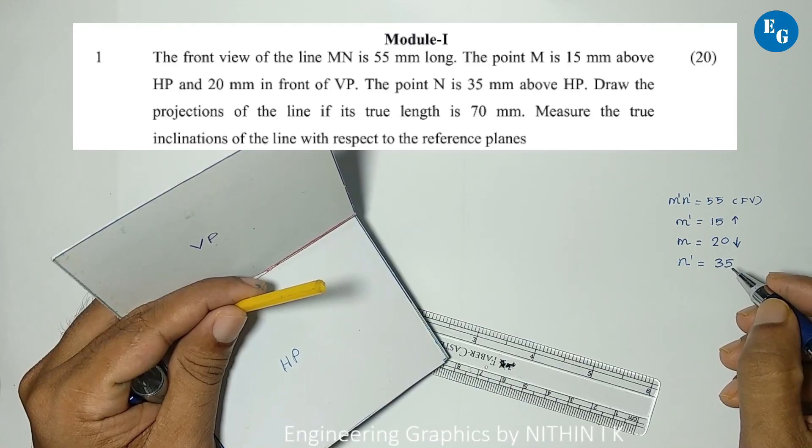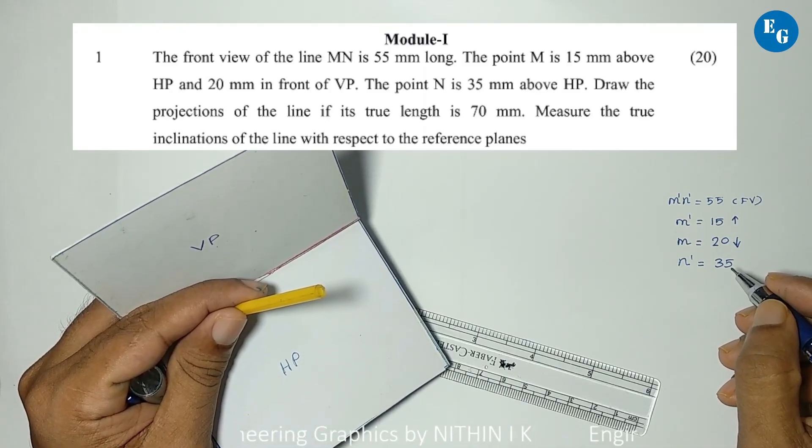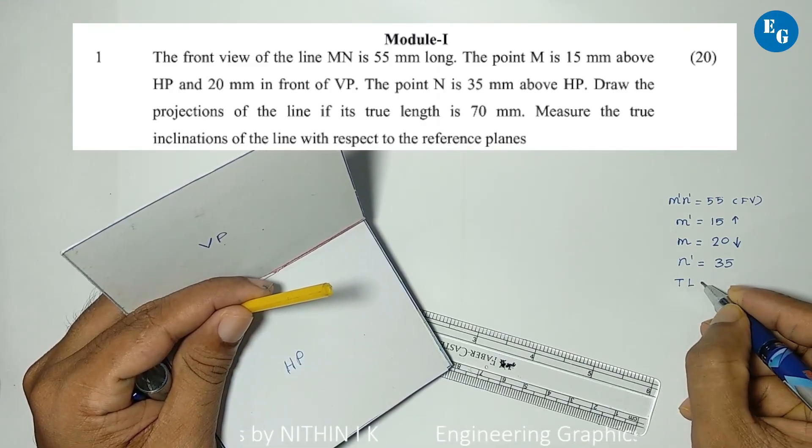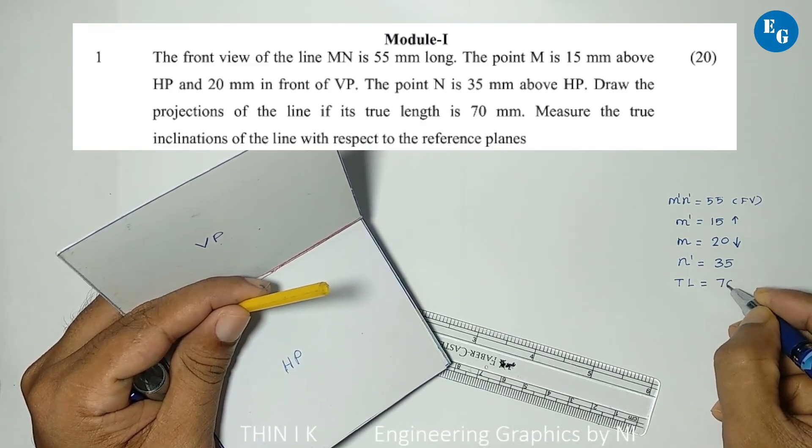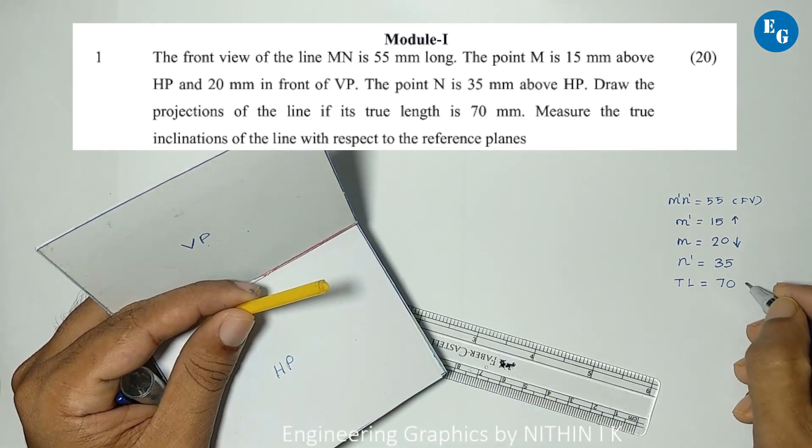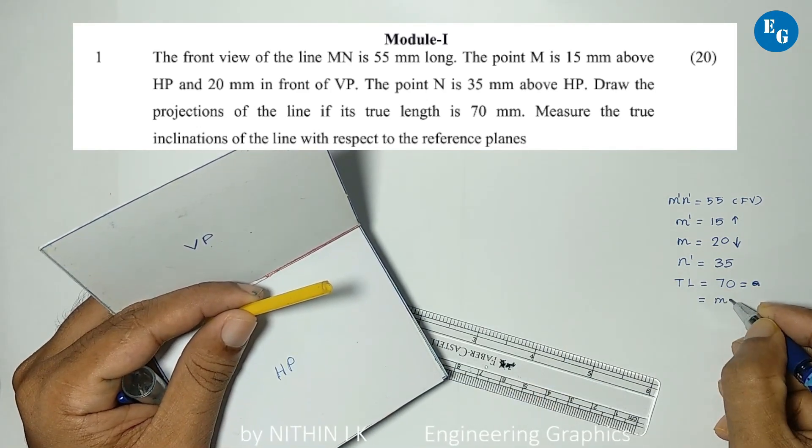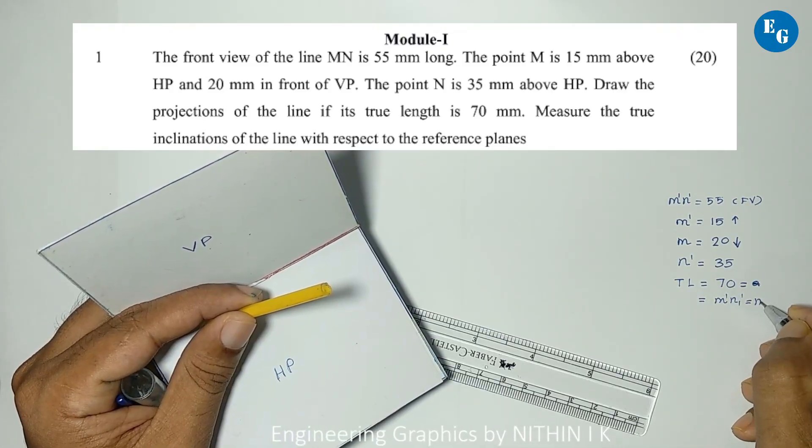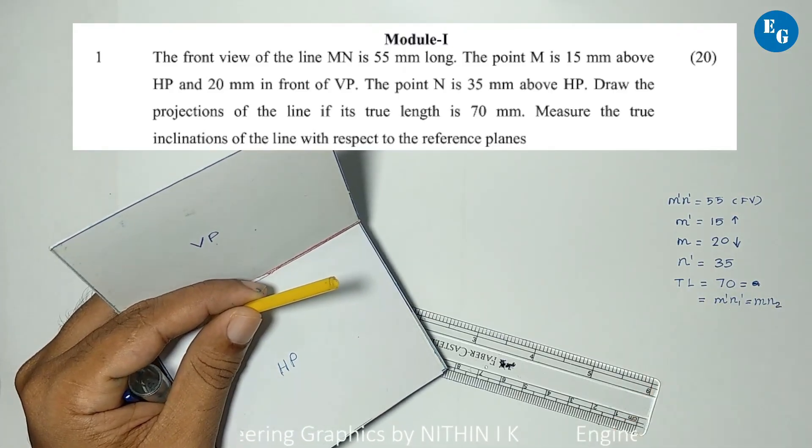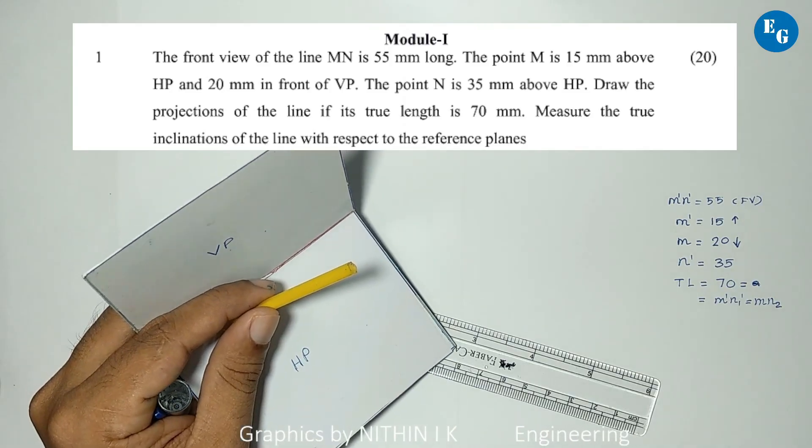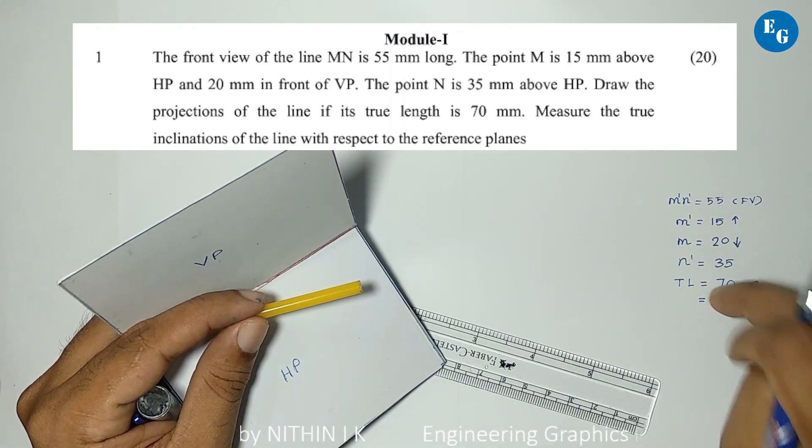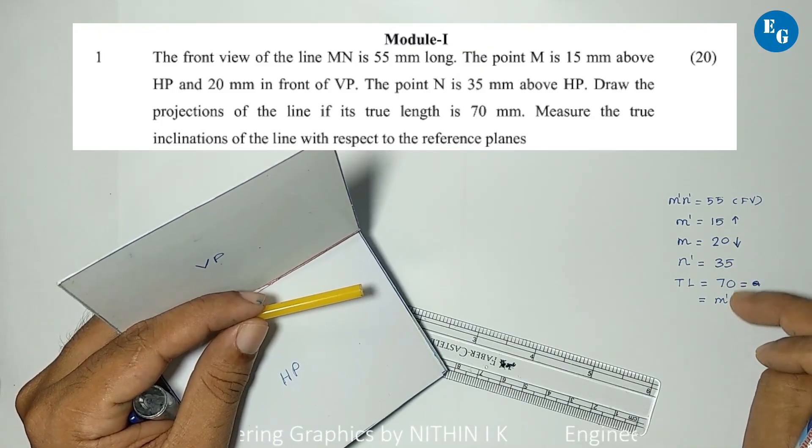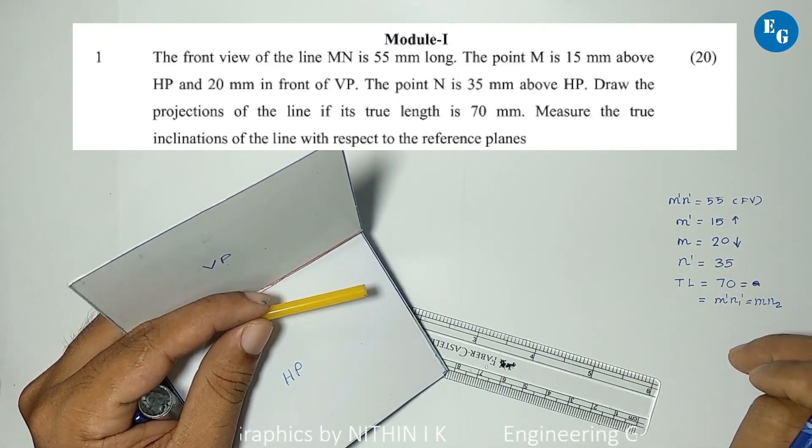Draw the projections of the line if true length is 70mm. That means M dash N1 dash or MN2 length equals 70mm. This is the problem. We have five data points. The line is inclined to both HP and VP, so we need to use the rotating line method.